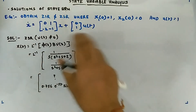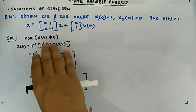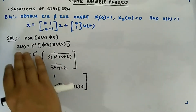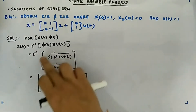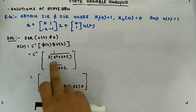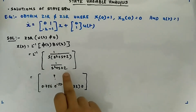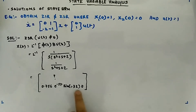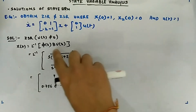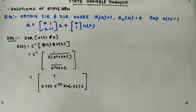This is a correction video, a continuation of what you have seen. We were calculating Zsr where u(t) was not equal to 0, and we calculated x(t) which is the Laplace inverse of phi(s,b) into u(s). The Laplace inverse of 1/(s²+s+2) came out to be 0.756·e^(−0.5t)·sin(1.32t) — that is correct. But the Laplace inverse of 1/(s·(s²+s+2)) I calculated wrong, and that is what I am correcting here.